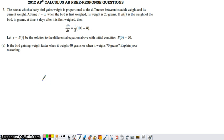So in part A here, we don't need all of the information that's provided. In part A, it says, is the bird gaining weight faster when it weighs 40 grams or when it weighs 70 grams? Explain your reasoning.